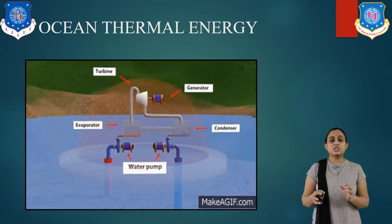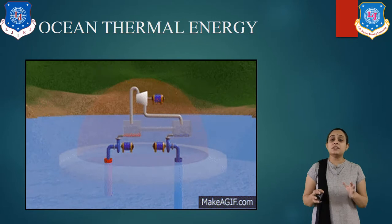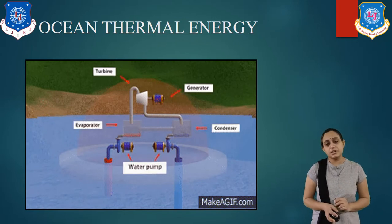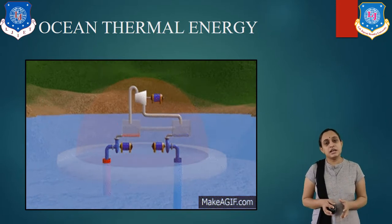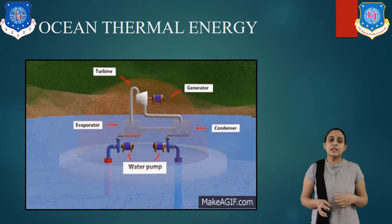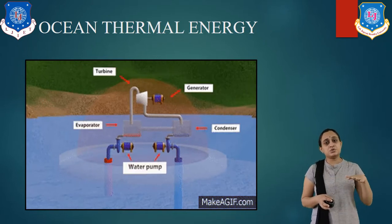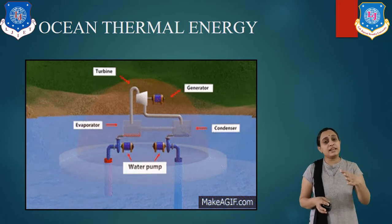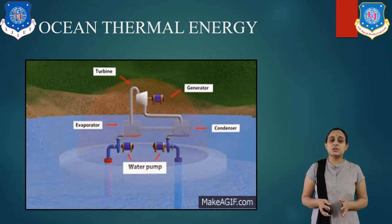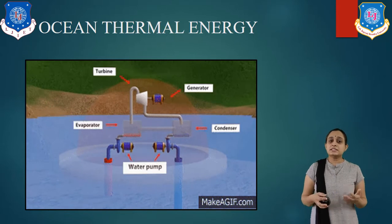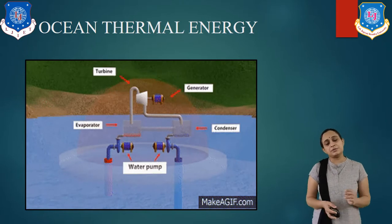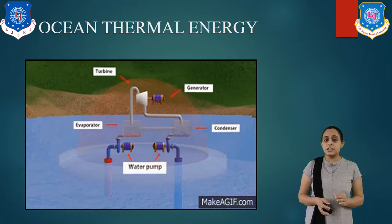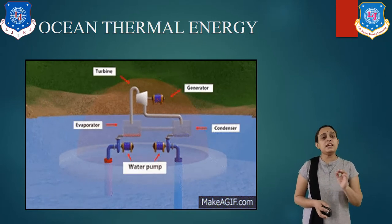Ocean thermal energy refers to the thermal energy available from the ocean — the temperature absorbed by the ocean water from solar radiations, meaning the upper layer gets heated. The warm surface ocean water is allowed to flow through a heat exchanger, which converts the warm surface water to steam. This steam drives a steam turbine coupled with a generator which generates electricity. Cold water from the deep sea is used to condense the steam in the condenser.